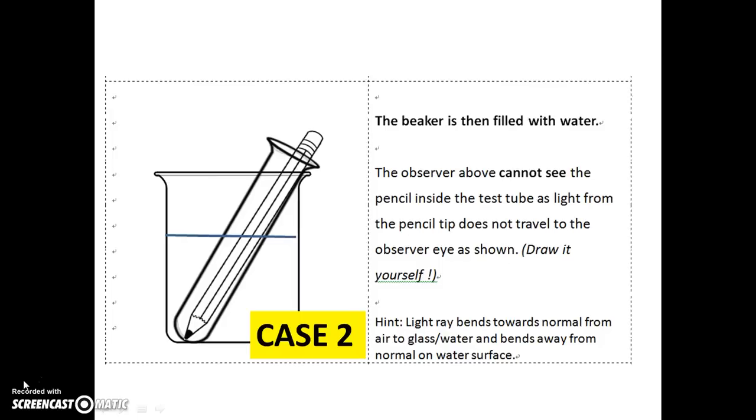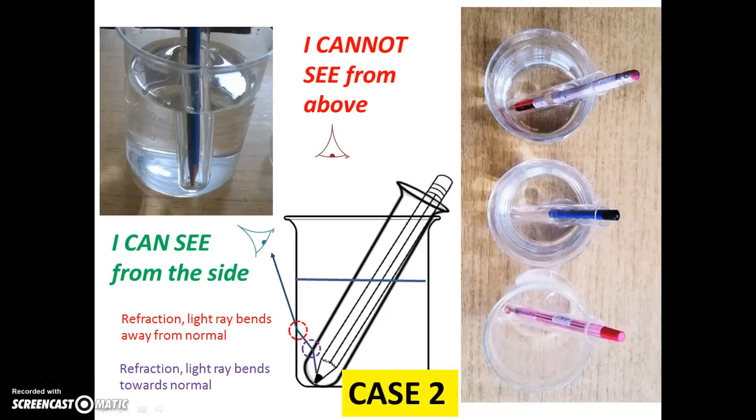For the second case, there is water in the beaker but not in the test tube. And let's see how we should draw the ray diagram. You may know that we cannot see the pencil from above. But indeed, we can see it if we are looking from one side. In this way, we may tell the light ray actually refracts to one side of the beaker so that you can see it from one side.